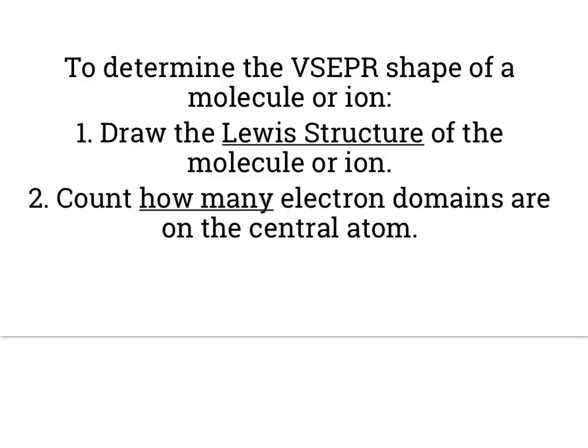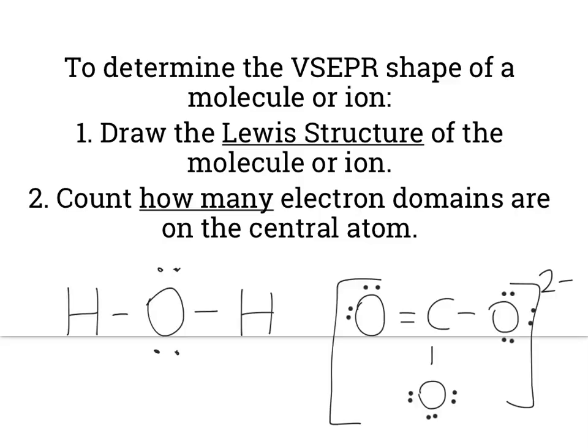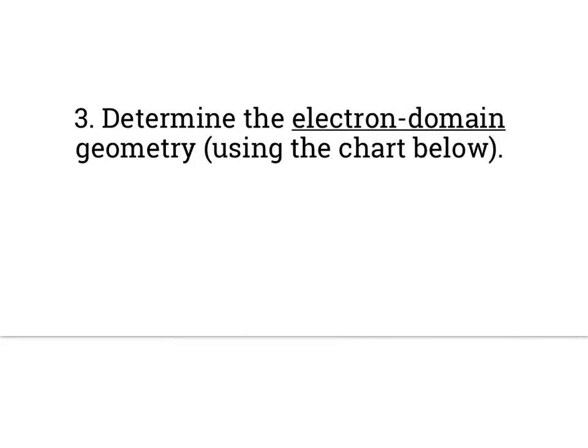Our second step is to count how many electron domains are on the central atom. Now, let me give you a few examples. In H2O, we have one, two, three, four electron domains. In carbonate, we have one, two, three electron domains around the central atom. Our third step is to determine the electron domain geometry using the chart below. That's going to come down just to memorization. Get that memorized as soon as possible.